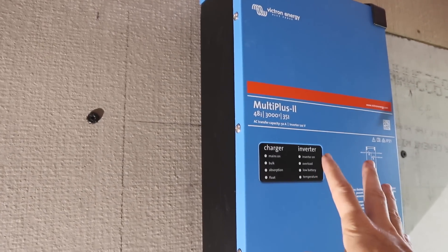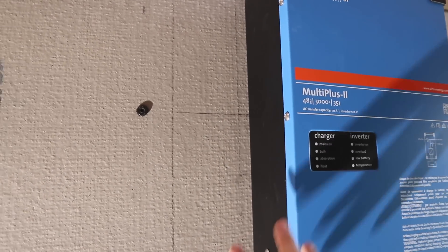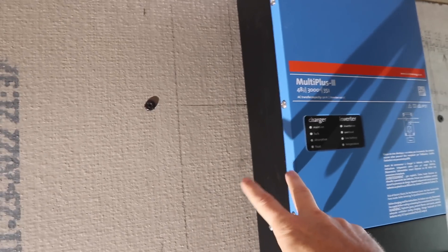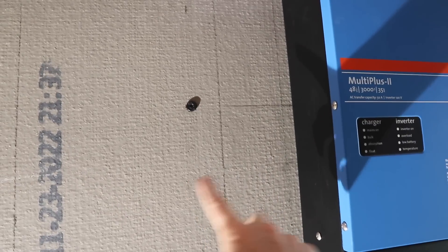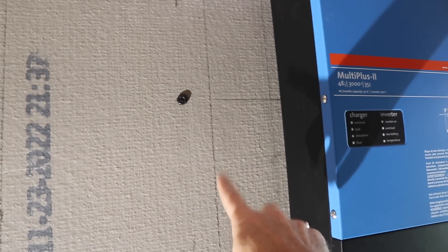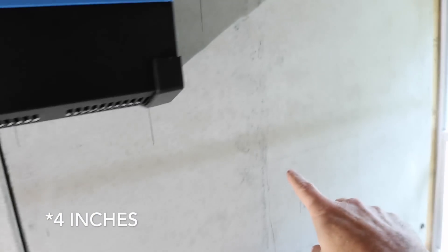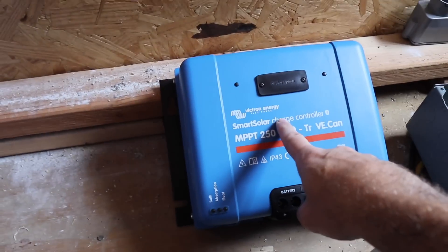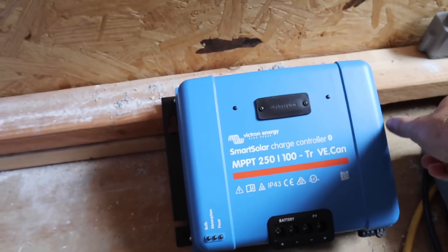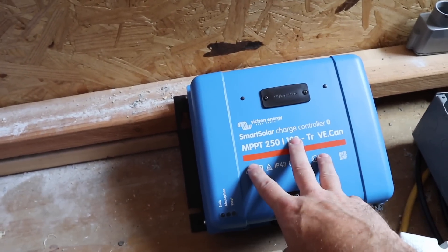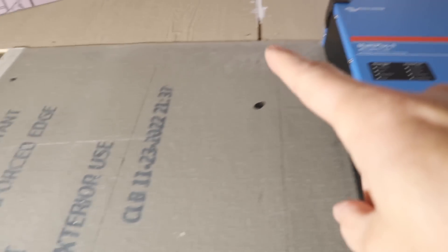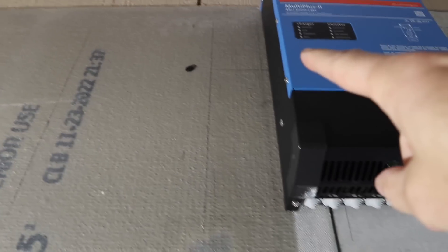What's really nice about these Victron products is that you can mount them closer together than most. So the spacing on these between the two multi plus inverters is only 10 centimeters. Also where we are going to put the MPPT, which is right down here, we only need 10 centimeters around each side to mount this.